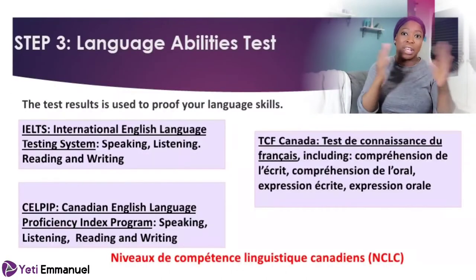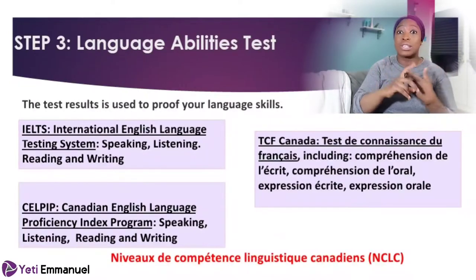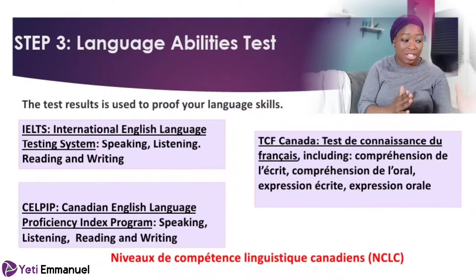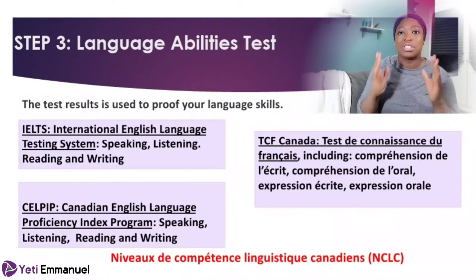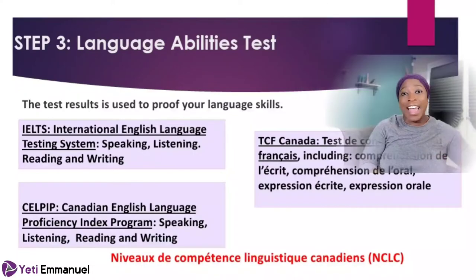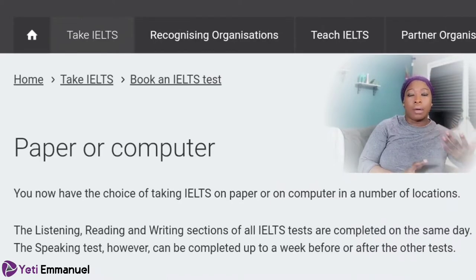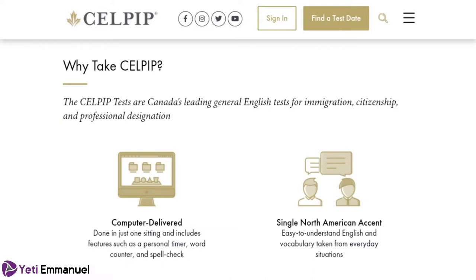Canada has approved two bodies for English testing and one for French. For English, they use CELPIP — the Canadian English Language Proficiency Index Program — and IELTS, the International English Language Testing System. For both, you must take the general option, not the academic. IELTS is the most popular because you can find it anywhere in the world — wherever there's a British Council. In Nigeria, it costs about 79,000 naira.